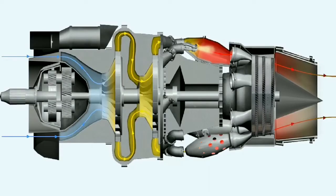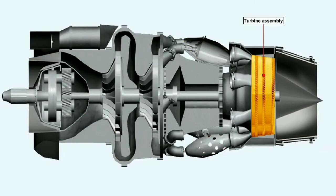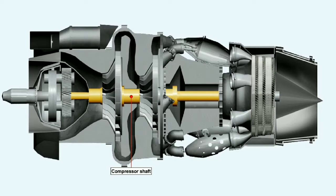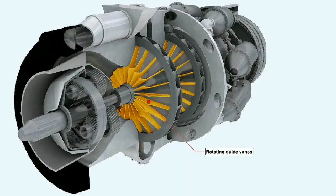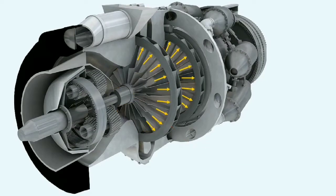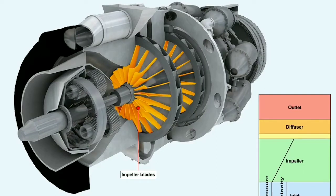The turbine assembly, attached to the compressor by a shaft, converts the pressure, velocity, and heat of the gases passing through the turbine into mechanical energy, which drives the impeller of the compressor at high speed. Air is introduced continuously into the eye — the center of the impeller — by rotating guide vanes, and centrifugal force causes the air to flow outwards across the impeller towards the tip. Because of the divergent shape formed between the impeller blades, pressure increases as the air flows outwards, and because the turbine is adding mechanical energy, the air's velocity also increases.